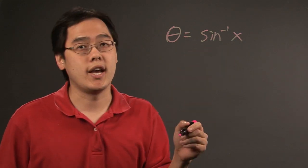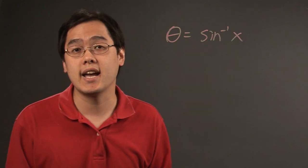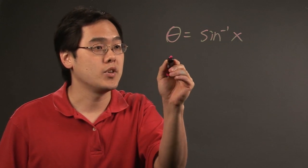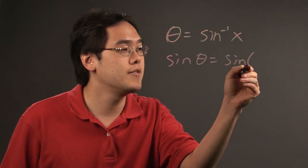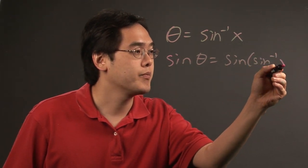Now, to get rid of an inverse sine, what you do is you literally take the sine of both sides. So here's how that works. You're going to have sine of theta is equal to sine of sine inverse of x.